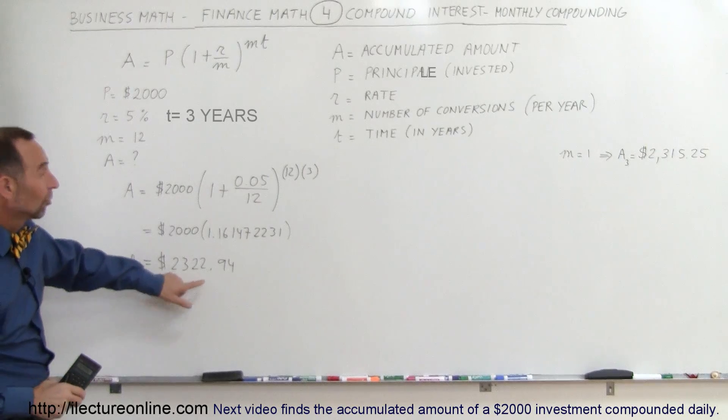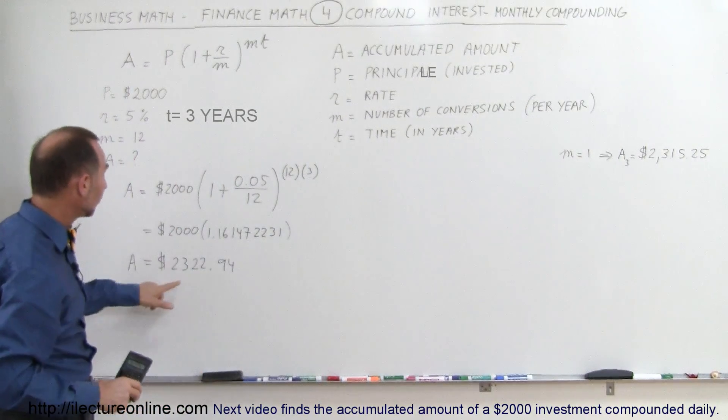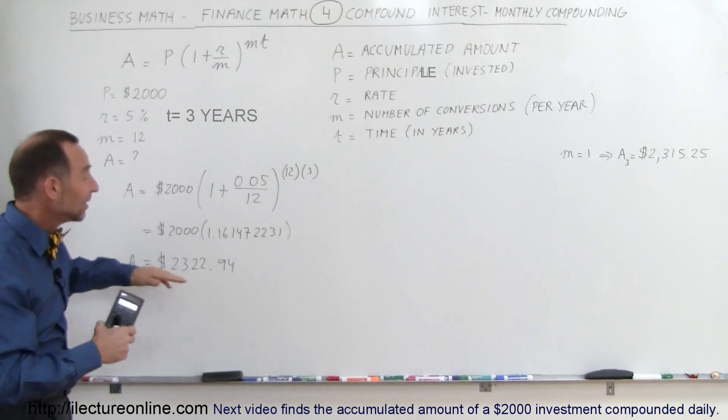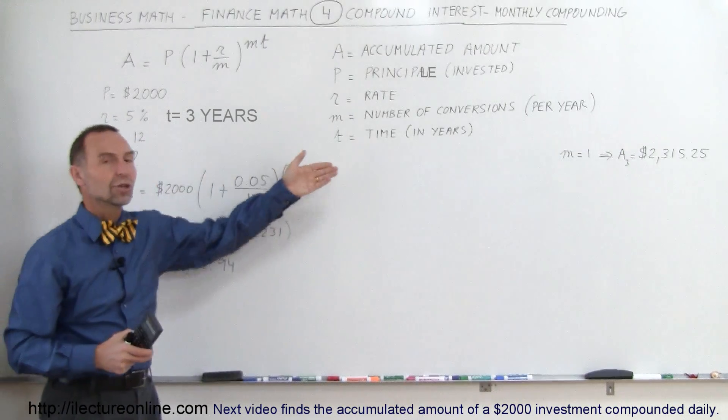Now notice the difference. There was $315.25 of earnings. Here with $322.94 of earnings, we'll earn about $7.50 more compounded monthly versus compounded yearly.